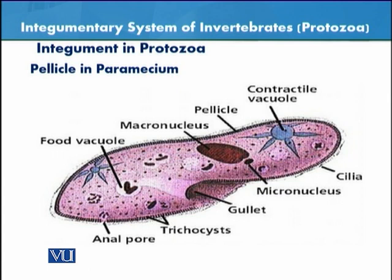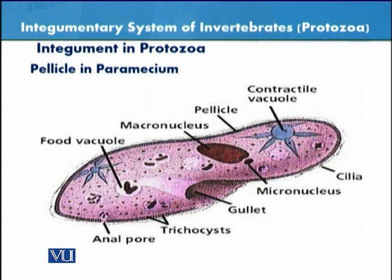The pellicle is in fact chitinous in nature — it is made of chitin. It is an additional protective layer beyond the cell membrane. It is an additional integument that protects these protozoans, especially since they live in aquatic environments which can sometimes become hostile or unfavorable.